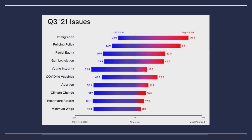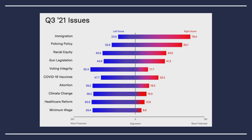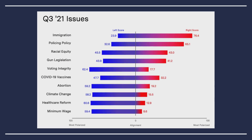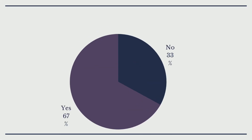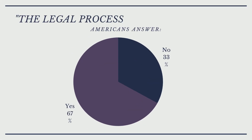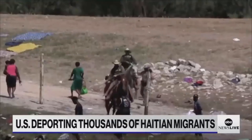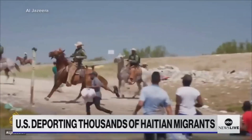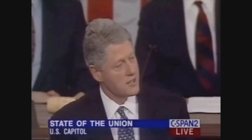In 2021, the USC Polarization Index found that immigration was the number one most contested topic within American politics. According to the Cato Institute, 67% of Americans agree that the legal immigration process is fairly difficult. As immigration reports flood our news sources, Americans are left to wonder what we can do to improve the immigration system.